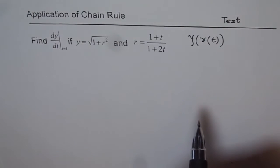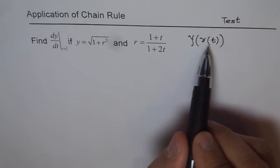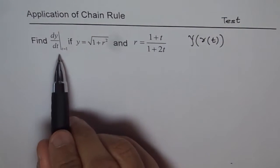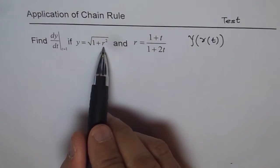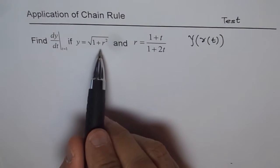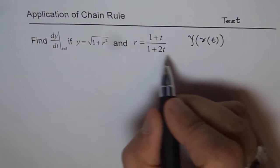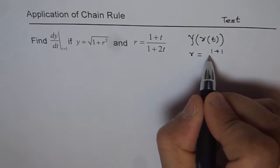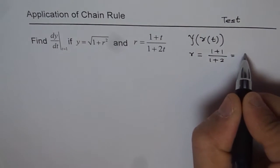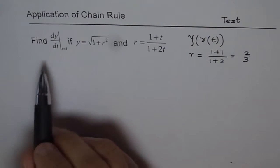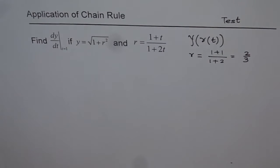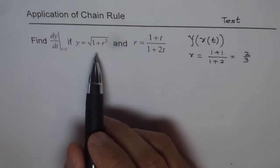We want to find dy/dt at t equals 1. It's a good idea to find r first. When t equals 1, r equals (1 plus 1) over (1 plus 2), which is 2 over 3. So at t equals 1, r equals 2/3. This helps because we won't need to write r in terms of t later.